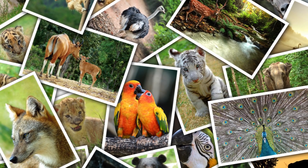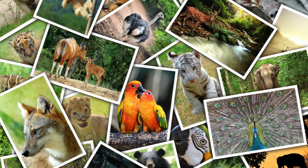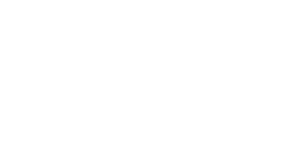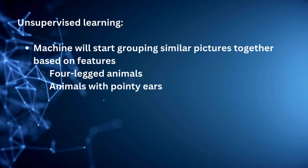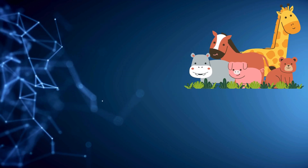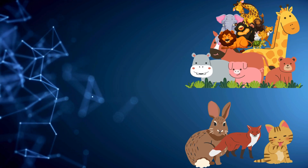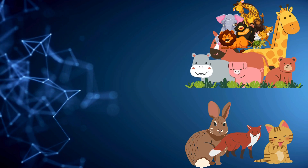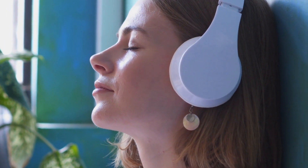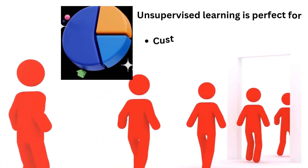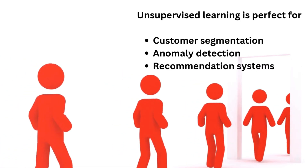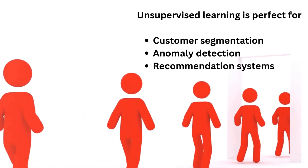Think of it like giving a student a pile of pictures of animals but not telling them what's a cat, dog, or elephant. With unsupervised learning, the machine starts grouping similar pictures together based on features — like all the four-legged animals, or all animals with pointy ears. This is called clustering. One example is when Spotify recommends new songs based on your listening habits — it identifies patterns in your preferences without needing to know what songs you already like. Unsupervised learning is perfect for customer segmentation, anomaly detection, and recommendation systems.